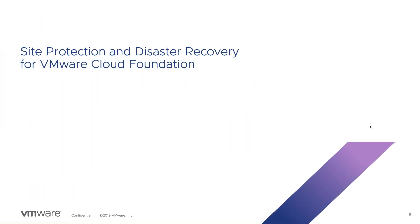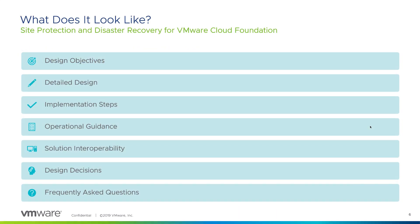Now, let's take a look at the Site Protection and Disaster Recovery for VMware Cloud Foundation Validated Solution. What do you get as part of a VMware Validated Solution? You get a set of documentation tailored to the solution that includes design objectives, a detailed design — including not just design decisions, but the justifications and implications of those decisions — detailed implementation steps with PowerShell alternatives for some steps to speed up time to deploy, operational guidance on how to use the solution once it's deployed, solution interoperability between it and other validated solutions, an appendix containing all of the solution design decisions in one easy place for review, and a set of frequently asked questions that would be updated for each release.